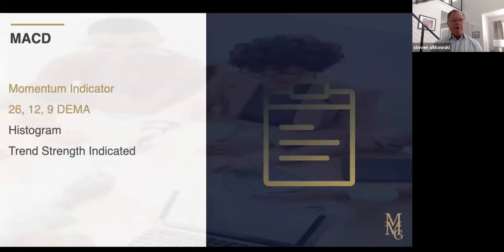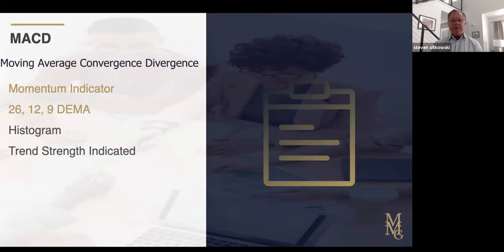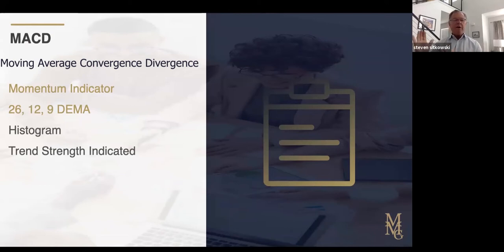MACD stands for Moving Average Convergence Divergence — that's a mouthful. Basically, it compares two different moving averages to one another and contrasts it to a third moving average.